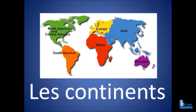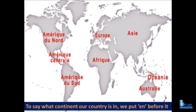Please stick with me and chat out loud as well — I find that helps. To say what continent your country is in, we put en before it. So we would say we're from Great Britain — nous venons de Grande-Bretagne — and then we would say en Europe, meaning 'in Europe'.